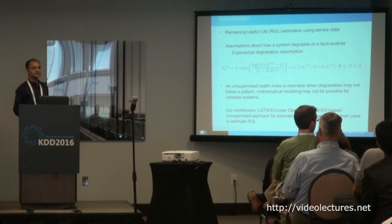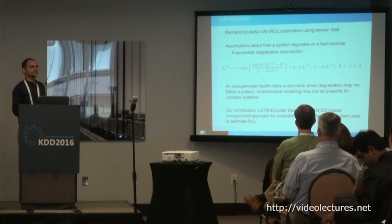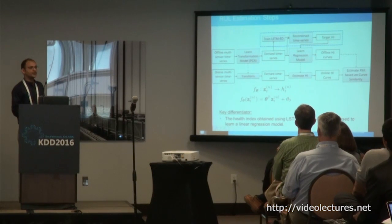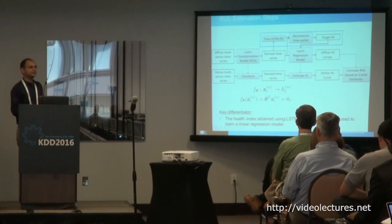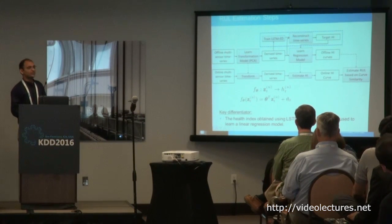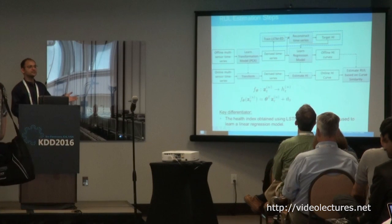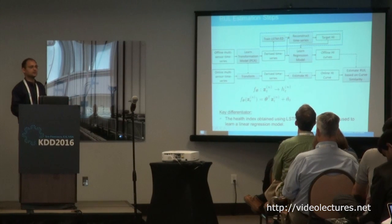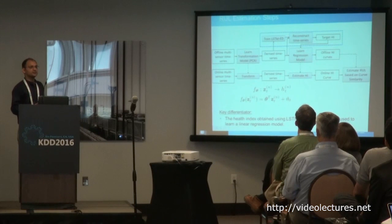Our contribution is an LSTM encoder-decoder based unsupervised approach for estimating the health index and then using it for remaining useful life estimation. A typical pipeline for RUL estimation uses offline multi-sensor time series data, performs dimensionality reduction such as PCA to reduce redundancy in sensor readings, and learns a mapping from sensor values to the health index. This health index comes from assumptions like the exponential assumption. Our contribution is that we obtain this target health index for learning the regression model using the LSTM encoder-decoder.